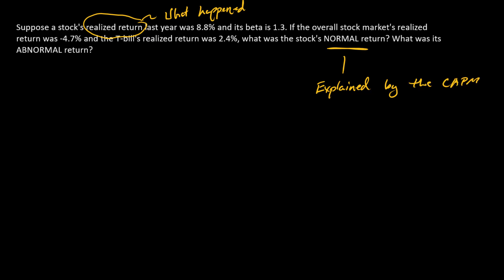And so that's just going to be the risk-free rate plus the stock's beta times the realized return on the market portfolio minus the risk-free rate. So there's the realized return. This just basically answers the question of what should have happened to the stock according to the CAPM.